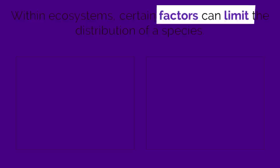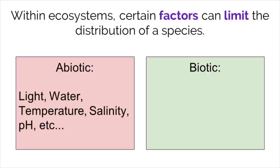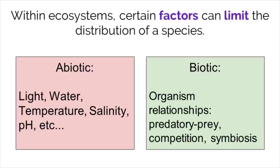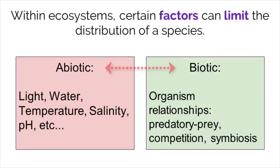Within the realm of ecology, a limiting factor is something that can restrict the distribution of a species. These limiting factors can either be biotic or abiotic. Biotic means living and abiotic means non-living. Simple abiotic limiting factors include light, water temperature, and pH, while biotic factors include relationships between other organisms like predators, competition, or types of symbiotic relationships. The relationship between these factors and the organisms within an ecosystem can cause some species to flourish, while it could limit the production and reproduction of others.